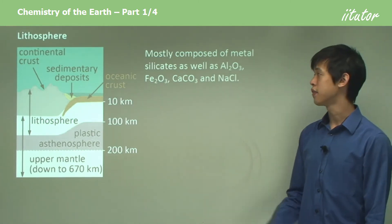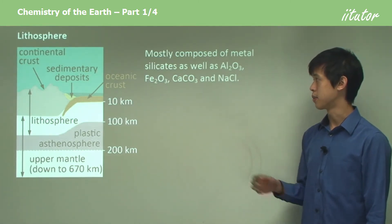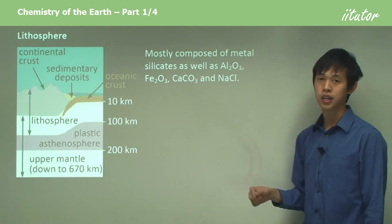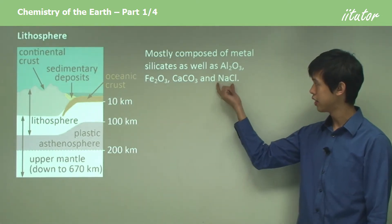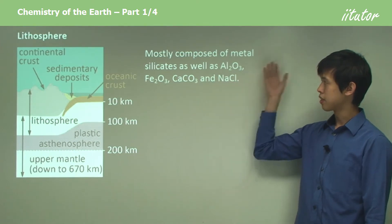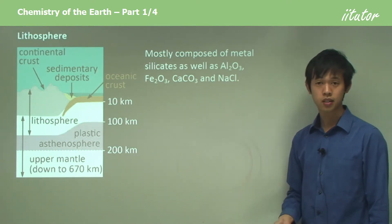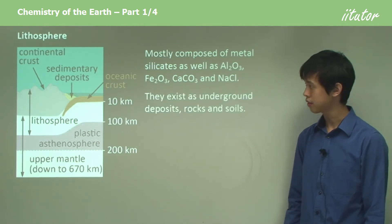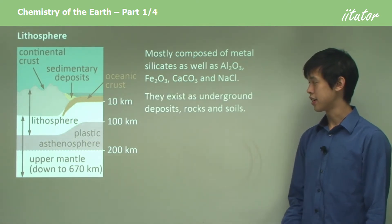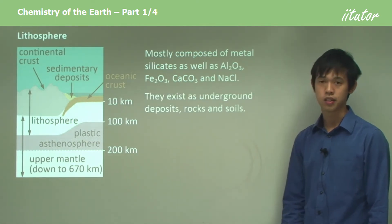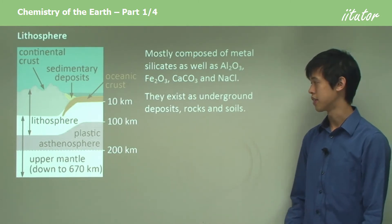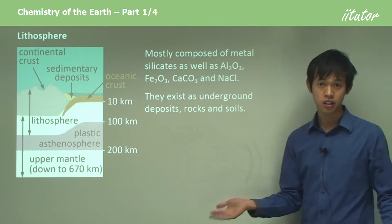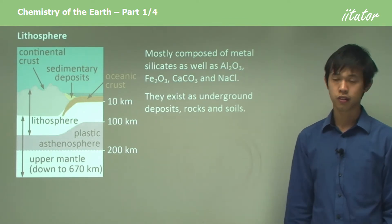What the lithosphere is composed of is mainly metal silicates, as well as aluminum oxide, iron oxide, calcium carbonate, and sodium chloride. It's mostly composed of metal silicates, but there are other chemicals like these scattered around. They exist as underground deposits, rocks, and soils.